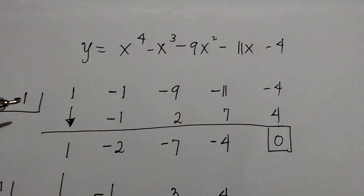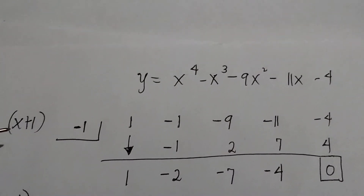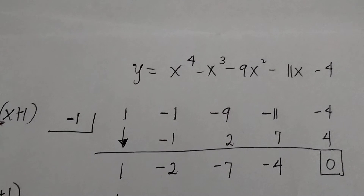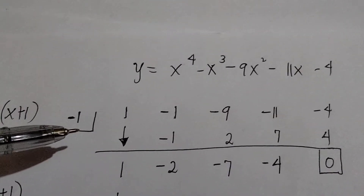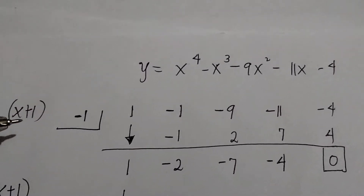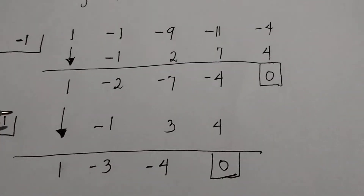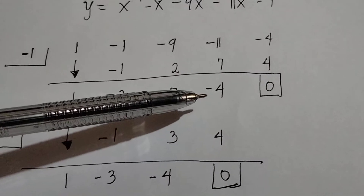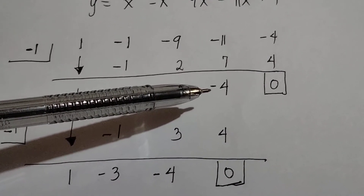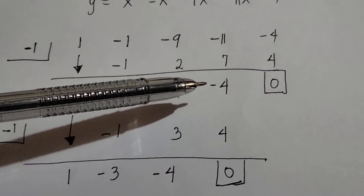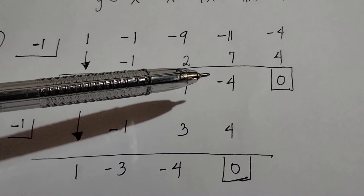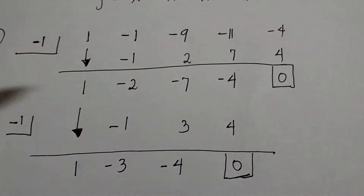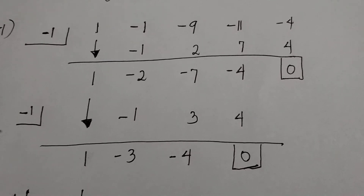Therefore, the linear factor is x plus 1. Negative 1 is one of the rational roots, so the linear factor is x plus 1. Let's continue. Since negative 4 is still the constant, the possible rational roots are still positive or negative 1, positive or negative 2, and positive or negative 4. Let's choose negative 1 again.